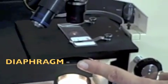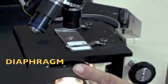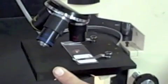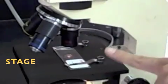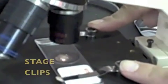It controls how much light is passing through the hole in this piece. What was the name of that piece? Okay, the stage. Perfect. How about these little pieces right here? What are they called? Stage clips. Awesome.